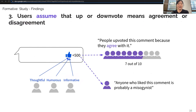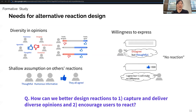Also, participants said they are less willing to react when they think their reaction will make no meaningful impact on the aggregated reaction. Participants consider diverse aspects of comments when leaving reactions. However, when asked to interpret others' reactions, 7 out of 10 participants assumed that up-down votes means the reactor's agreement or disagreement with the comment, and some expressed contempt toward unexpected reactions. To summarize: people leave up-down votes with diverse reasons and thresholds, but interpret others' reactions with a shallow assumption of agreement or disagreement. Also, people choose not to react when they cannot precisely express their opinion or think the impact is small. Based on this, we questioned how to better design reactions to capture and deliver diverse opinions and encourage users to react.